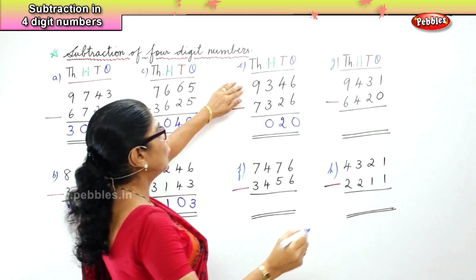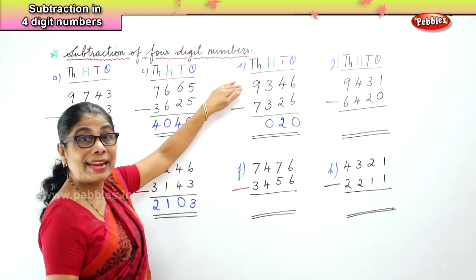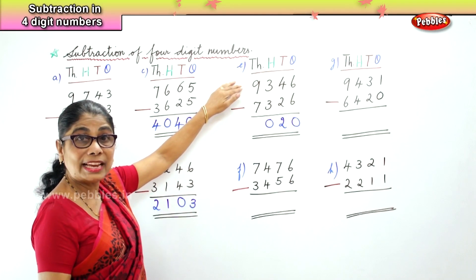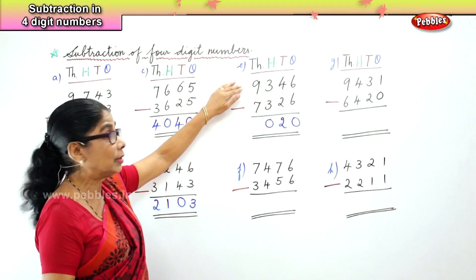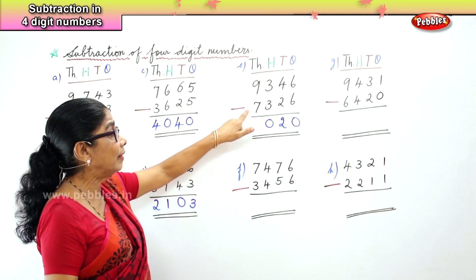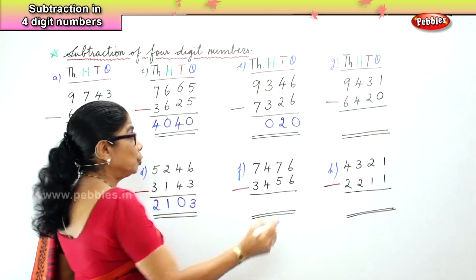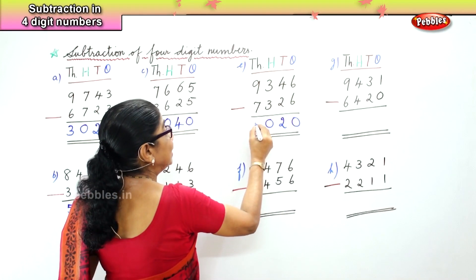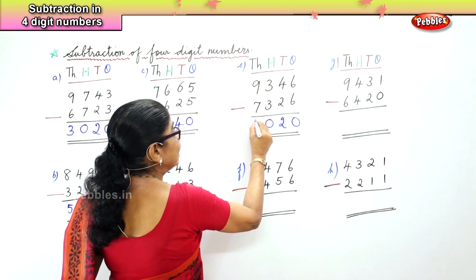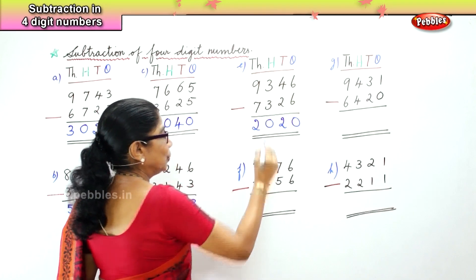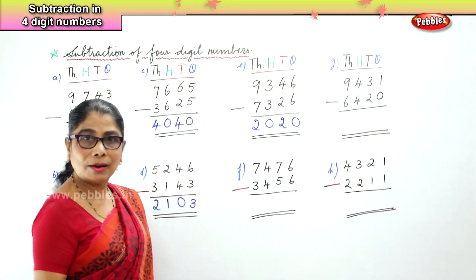In the thousands place, 9,000 take away 7,000 — 9 take away 7 is 2.